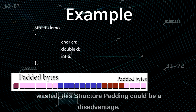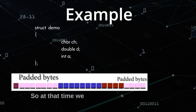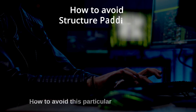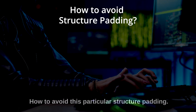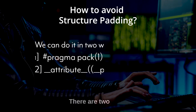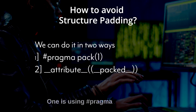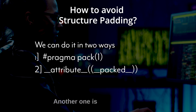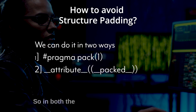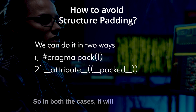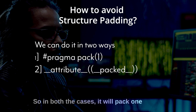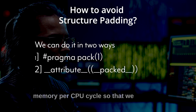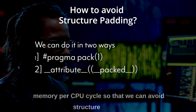These bytes are called padded bytes. When a large number of bytes are being wasted, structure padding can be a disadvantage. To avoid structure padding there are two ways: one is using `#pragma pack(1)`, and the other is using `__attribute__`. In both cases it will pack one byte of memory per CPU cycle, so structure padding is avoided.